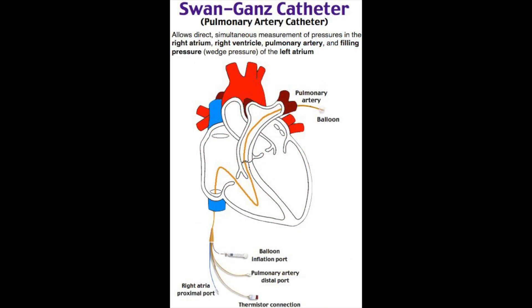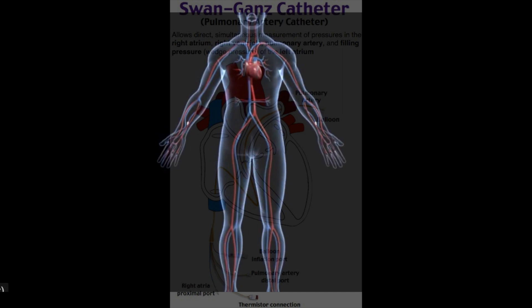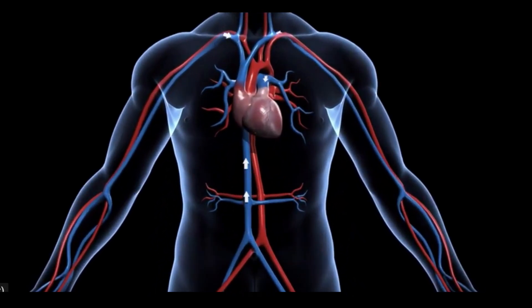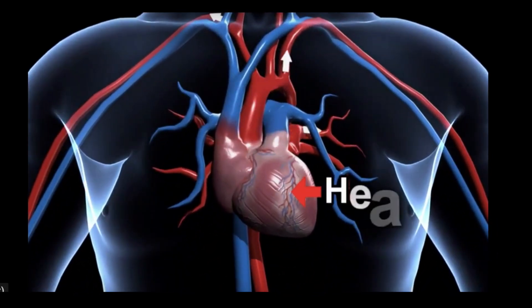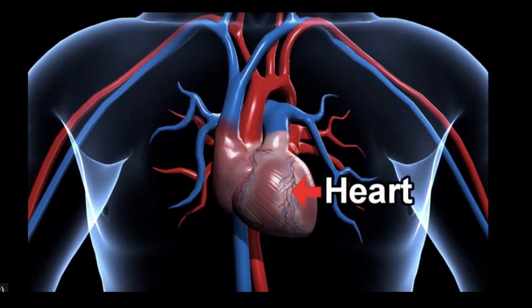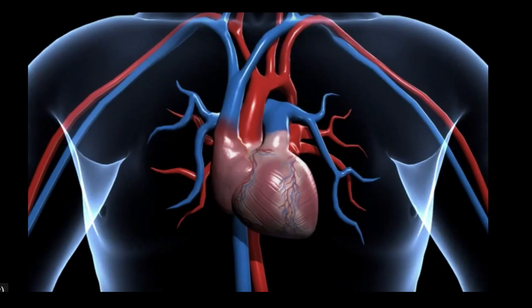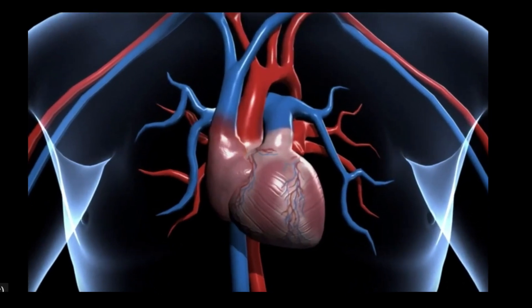It measures the pressure at three different places: the right atrium, pulmonary artery, and pulmonary capillaries. These measurements can be used to figure out the amount of oxygen in the blood of the right portion of the heart. It's also used to figure out how much blood flows out of the heart overall.